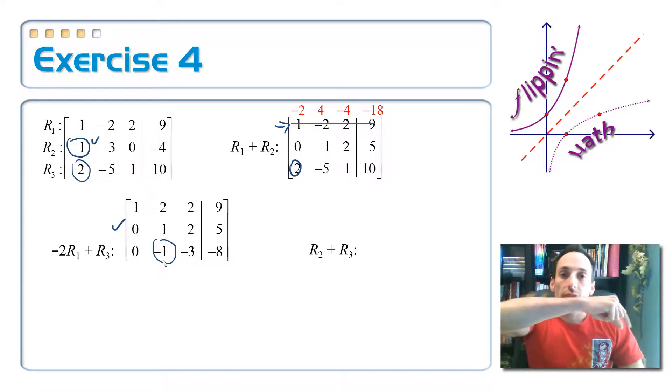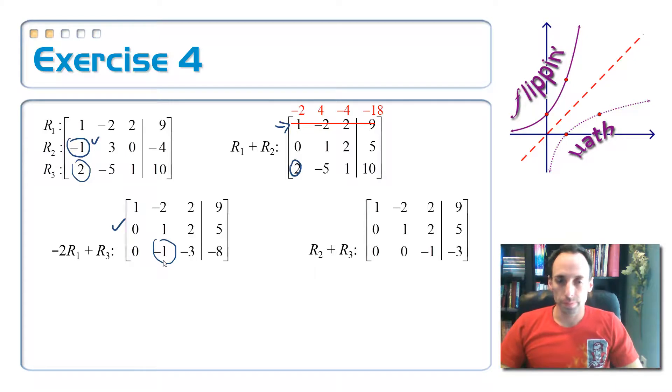The top stays the same. Row 2 stays the same. But my new row 3 is 0 plus 0 is 0. So, 1 minus 1 is 0. 2 minus 3 is negative 1. And then 5 minus 8 is negative 3.